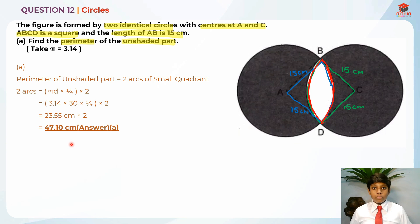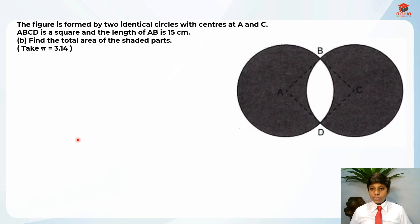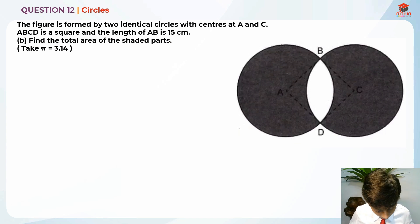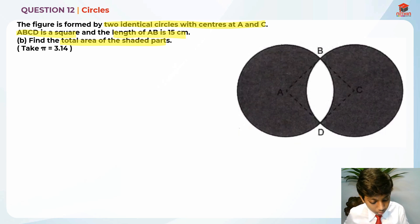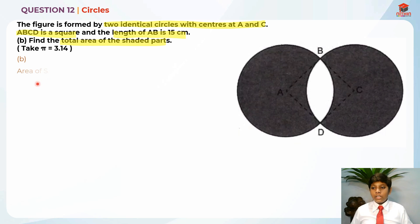Now let's move on to Part B. So it's still question 12. Find the total area of the shaded parts. We know the length AB and the two identical circles with centers A and C, and ABCD is a square. In order to find the area of shaded parts, it's actually two circles minus two areas of the unshaded.